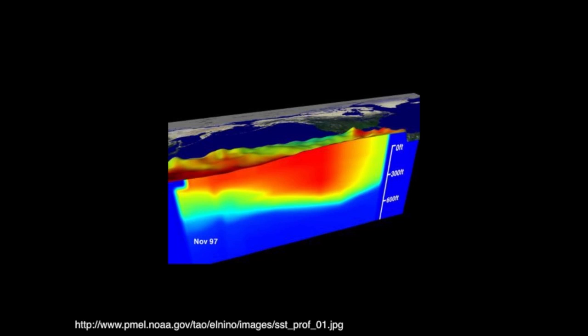Here's a cool 3D plot from the Pacific Marine Environmental Laboratory in Seattle showing how temperature can vary in the ocean.